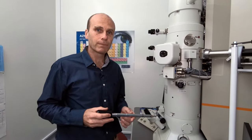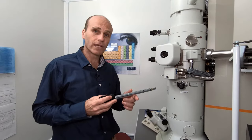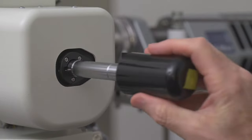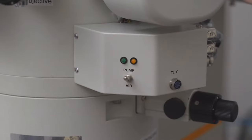So now we'll load the sample into the microscope. In order to do that, we have to put it into the airlock and then pump the airlock down, so that the sample itself is at the same vacuum as inside the microscope. Okay, so we've loaded the sample into the microscope.